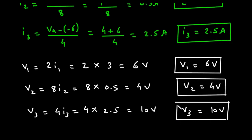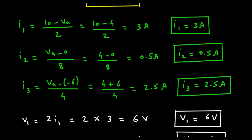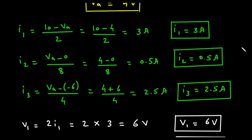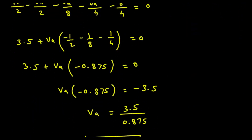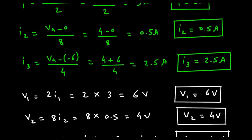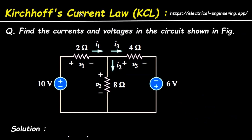This is how we find voltages V1, V2, V3 and currents I1, I2, I3. This is the problem on Kirchhoff's current law, or KCL. To download notes, visit electrical-engineering.app. Don't forget to like, share and subscribe to this channel — thanks for watching.